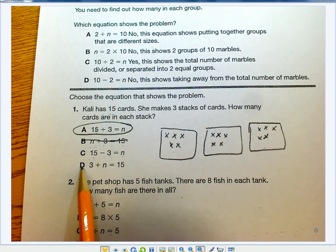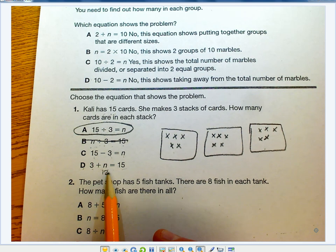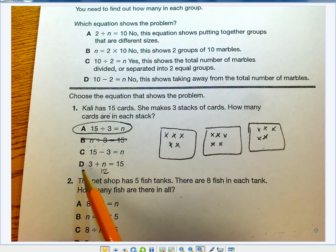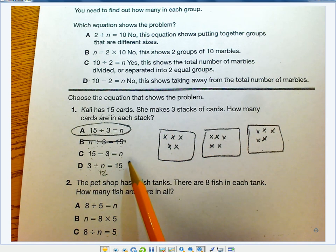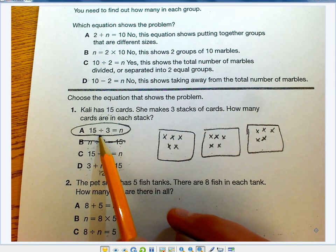And then D would be 3 plus n equals 15. Now we know that that would equal 12, and so the answer to that would be if I had maybe three cards and I added 12 more cards to get 15. But we know we sorted them, shared them equally into three groups, so it has to be a division problem.